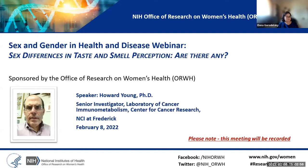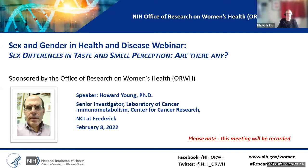It's my pleasure to introduce today's speaker, Dr. Howard Young. Dr. Young obtained his PhD in microbiology at the University of Washington and carried out postdoctoral research at the NCI under Drs. Edward Skolnick and Wade Parks. He was a member of the Laboratory of Molecular Immunoregulation at NCI Frederick from 1983 to 1989, prior to joining the NCI Frederick Laboratory of Experimental Immunology in 1989. He was president of the International Society for Interferon and Cytokine Research from 2004 to 2005 and served as chair of the Immunology Division of the American Society for Microbiology. He has also served as chair of the NIH Cytokine Interest Group and co-chair and then chair of the NIH Immunology Interest Group.